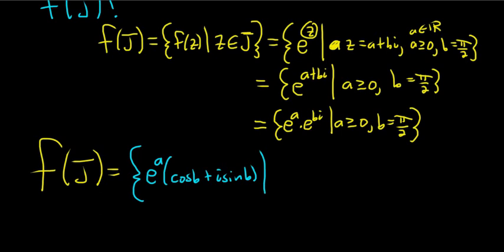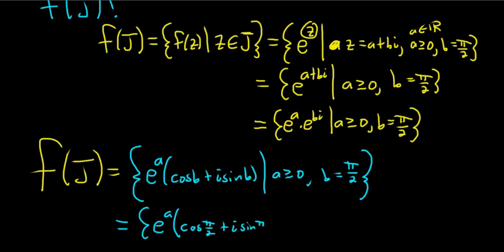And here a is greater than or equal to 0, and b is equal to pi over 2. So we have now e to the a. Let's go ahead and replace b with what it actually is. We have cosine of pi over 2 plus i sine of pi over 2, such that a is greater than or equal to 0.